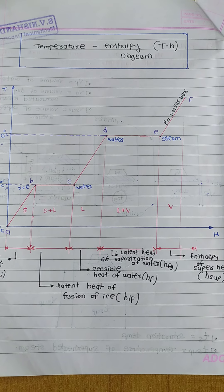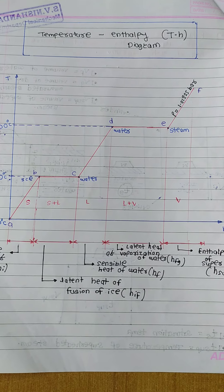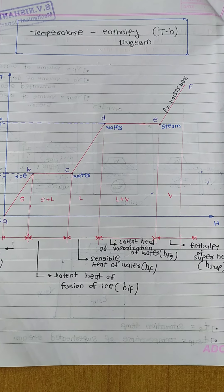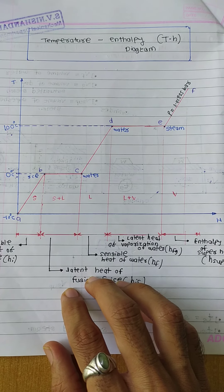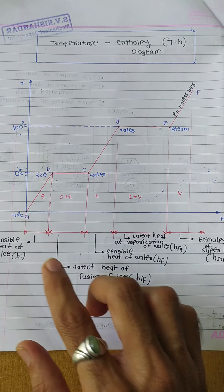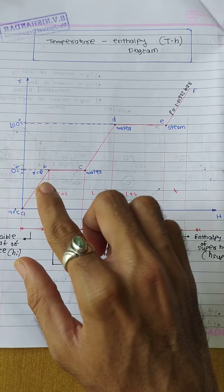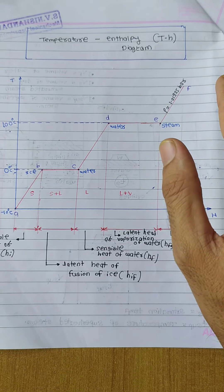I also share that link in the description. Please go through that video first, then watch this one — otherwise we can't understand. In the previous video, we discussed the various steps from A to B, B to C, C to D, D to E to F.